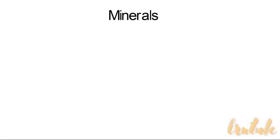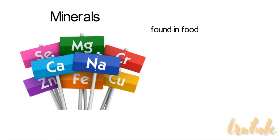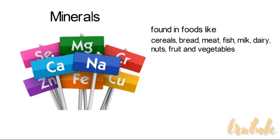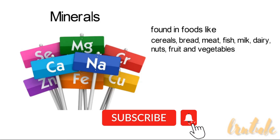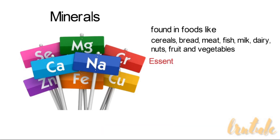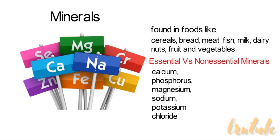Minerals are found in foods like cereals, bread, meat, fish, milk, nuts, fruits especially dried fruits, and vegetables. We need more of some minerals than others — for example, we need more calcium, phosphorus, magnesium, sodium, potassium, and chloride, and then minerals like iron, zinc, iodine, and copper. A lot of these minerals are the same elements you would find on the periodic table.